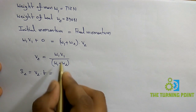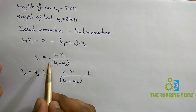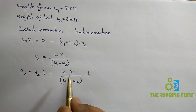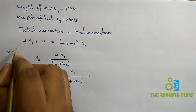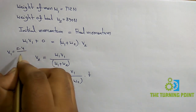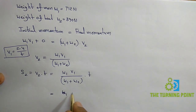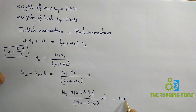Substituting: s2 = [w1·v1 / (w1 + w2)] × t. The velocity of the man v1 is not given directly, but the distance covered by the man is given. Since v1 = distance / time = 2.4 / t, substituting: s2 = 712 × 2.4 / t / (712 + 890) × t, which simplifies to 1.067 meters.